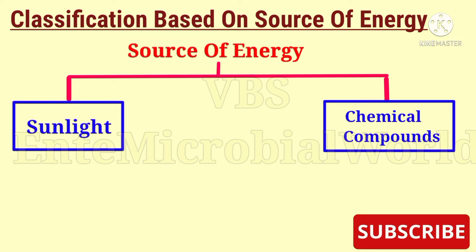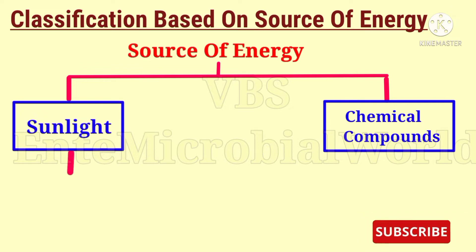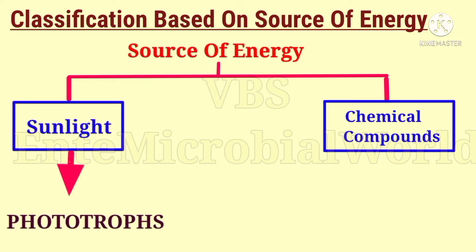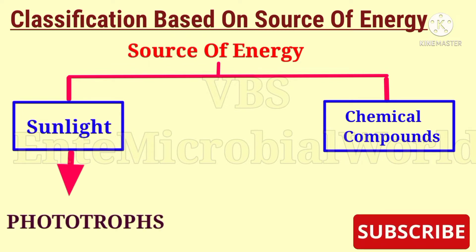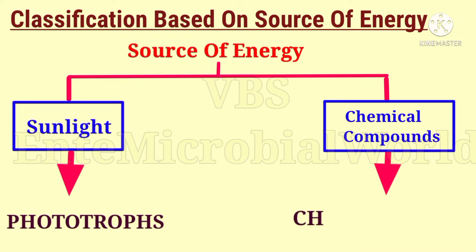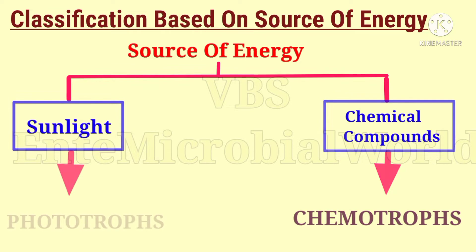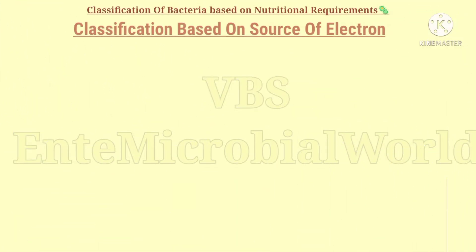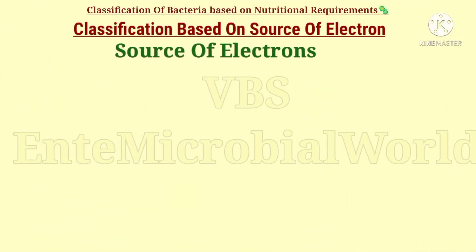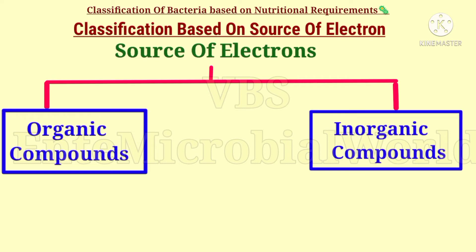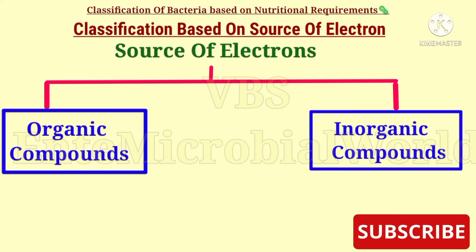Bacteria which derive their energy from sunlight are called phototrophs. Bacteria which derive their energy from chemical reactions are called chemotrophs. Classification of bacteria based on sources of electrons: we know that organic compounds and reduced inorganic compounds are the major sources of electrons.